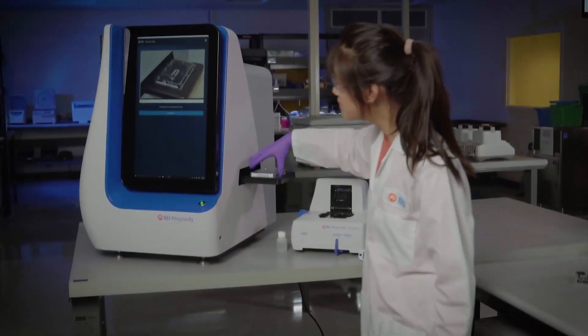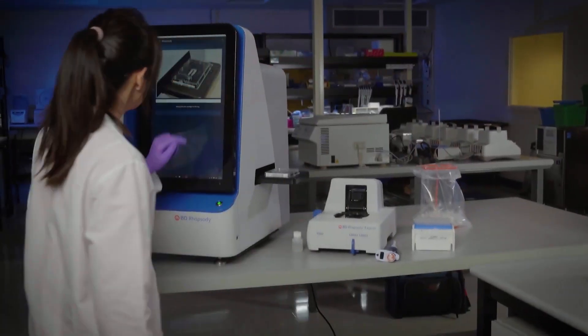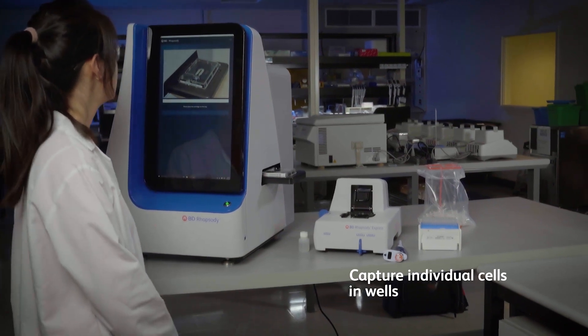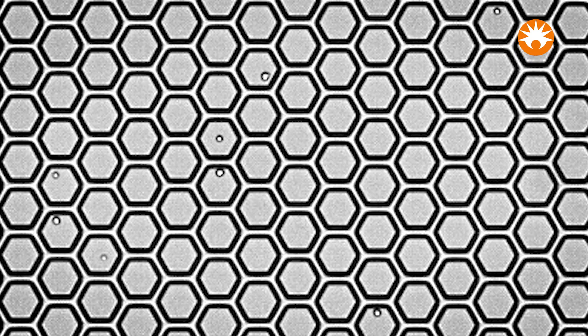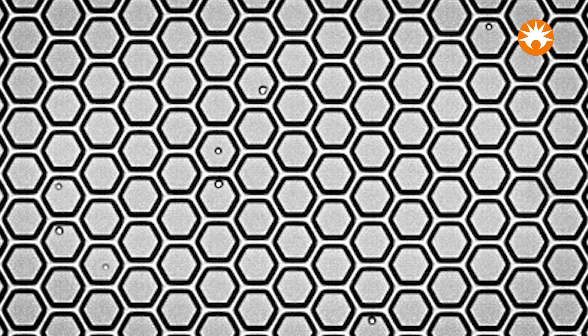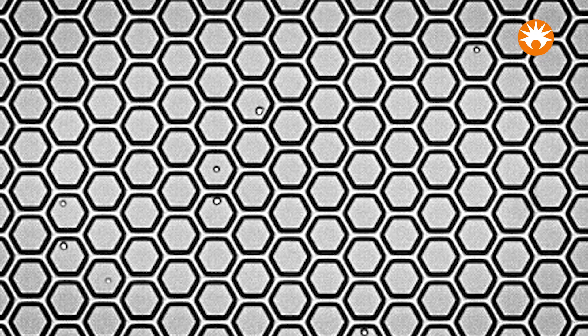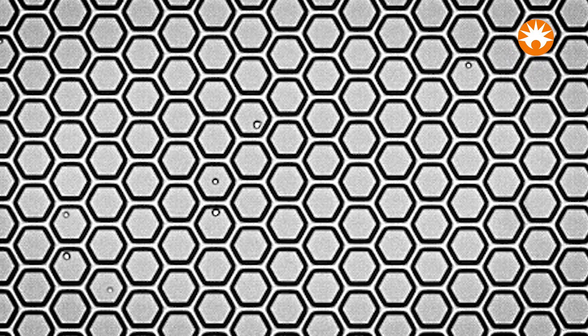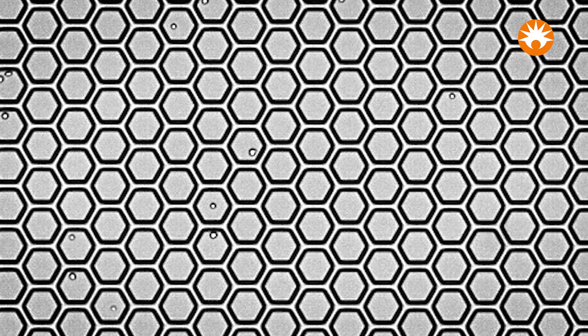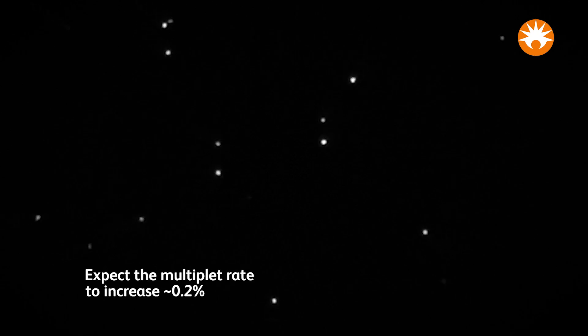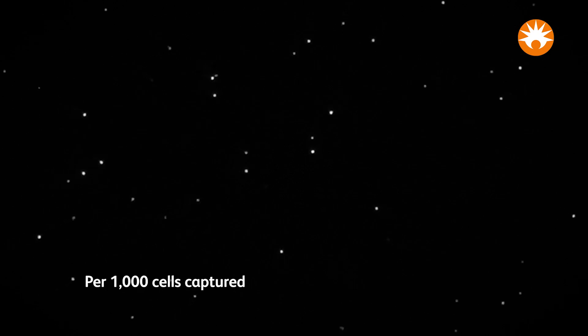The first step of the BD-Rhapsody scanner workflow is to capture individual cells in wells. The scanner will count each of the cells and report back the number of viable cells captured in a well and the actual multiplet rate. If these numbers are in line with your expectations, then you are clear to proceed to the next step of the protocol. With a perfect single-cell suspension, we expect the multiplet rate to increase about 0.2% per 1000 cells captured.